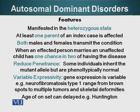Reduced penetrance: in some autosomal dominant disorders, people carry the disease-causing gene but the gene does not manifest its condition. It is a rare phenomenon and not very clearly understood, but one example is BRCA, a type of breast cancer gene.